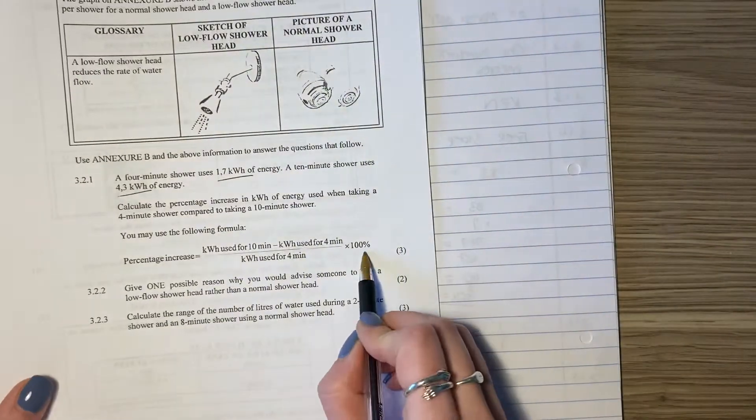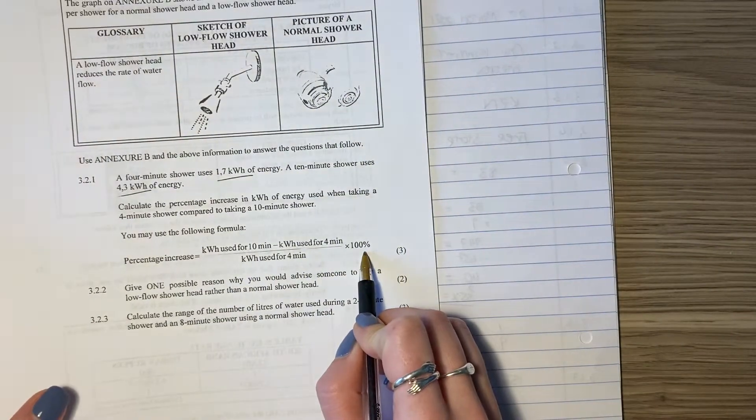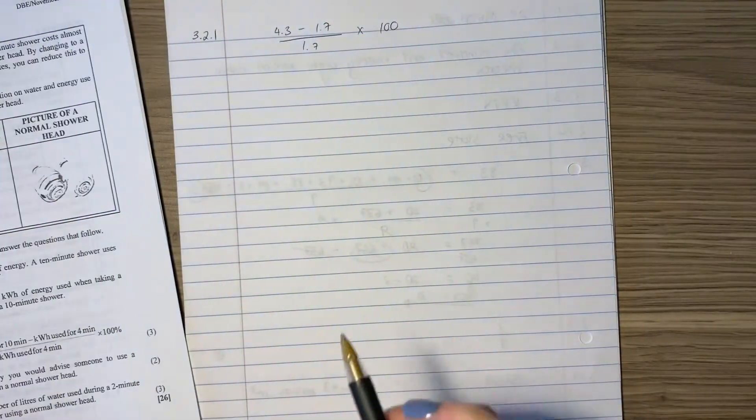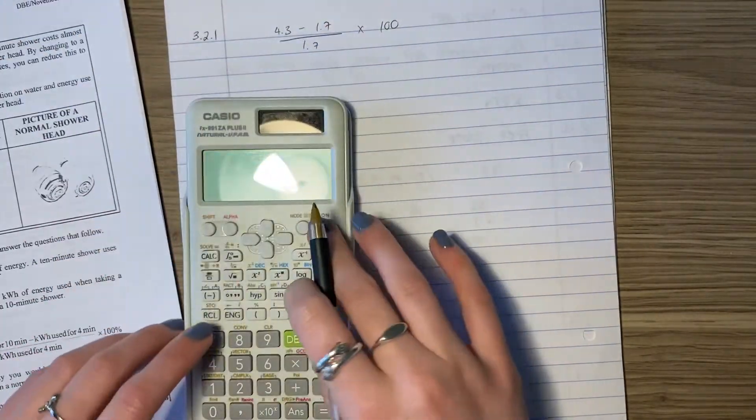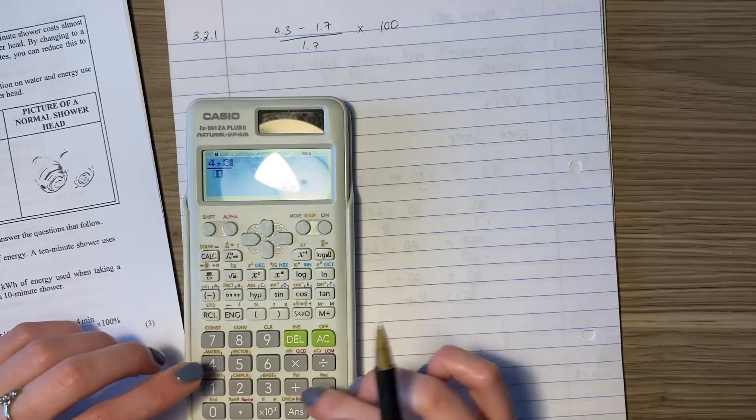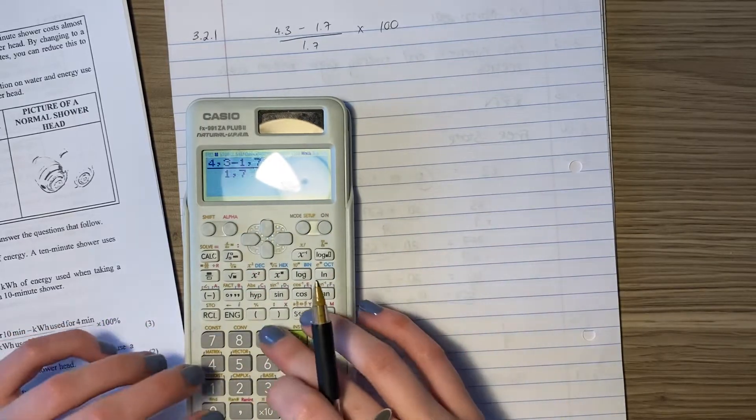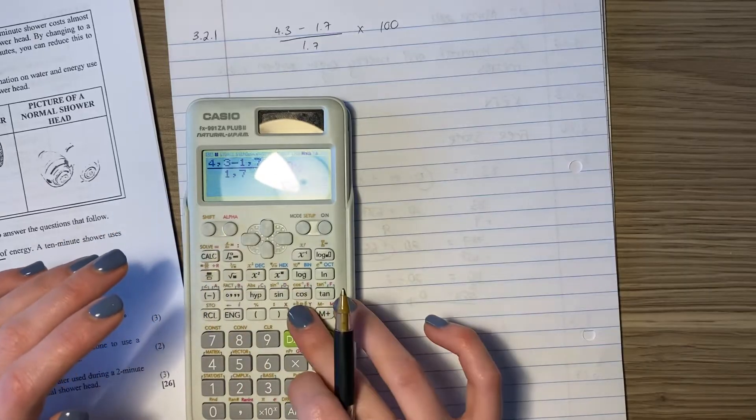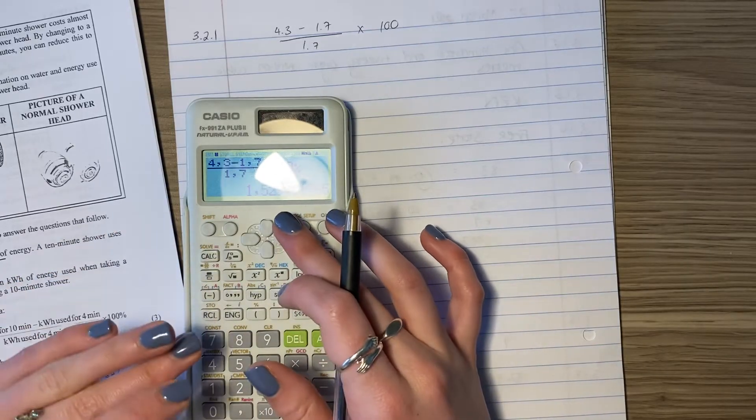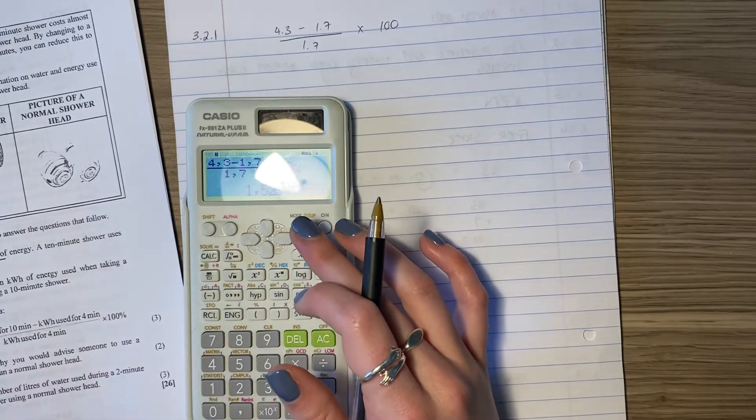Now interestingly here, they always put this percentage sign in here, but if you actually put that into your calculator, it kind of comes out a bit weirdly. So let me just show you. So 4.3 minus 1.7 over 1.7, and if you put it in like this... that's not actually the correct percentage.